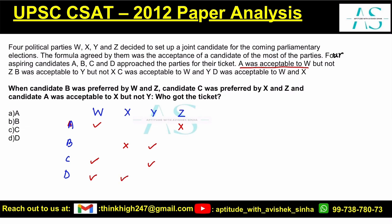Now let's learn more details. When candidate B was preferred by W and Z, candidate C was preferred by X and Z. And candidate A was acceptable to X, but not Y.